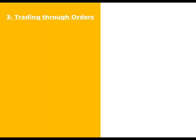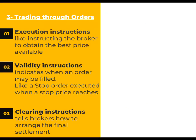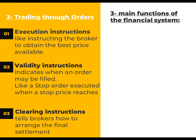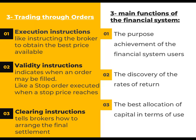Three: trading through orders. Execution instructions — instructing the broker to obtain the best price available. Validity instructions — like a stop order, executed when a stop price is reached. Clearing instructions — arrange the final settlement. The three main functions of the financial system are: the purpose achievement for financial system users, discovery of the rates of return, and the best allocation of capital.